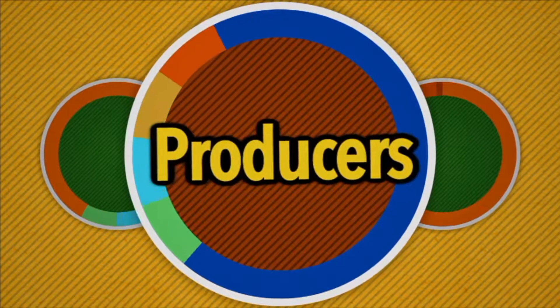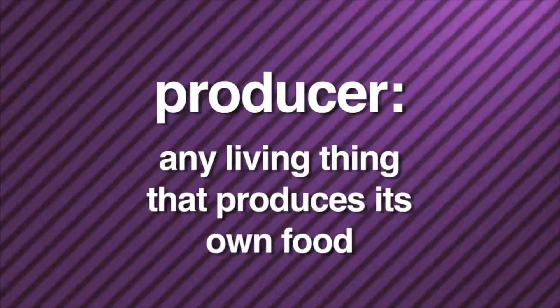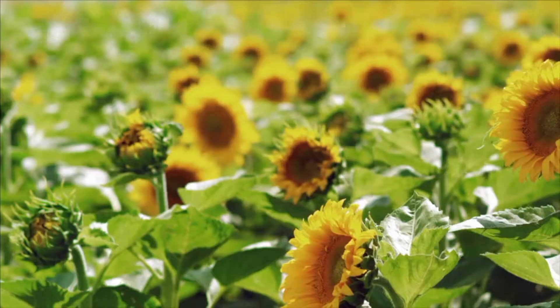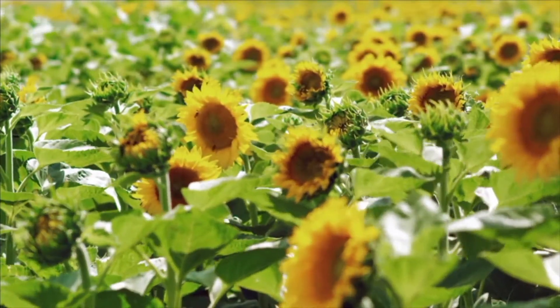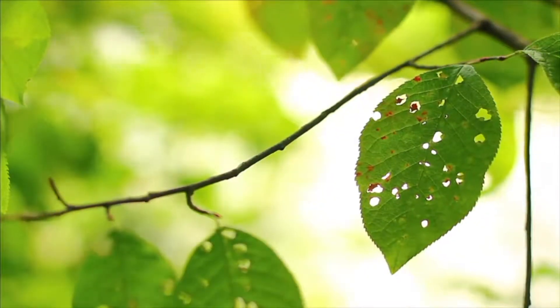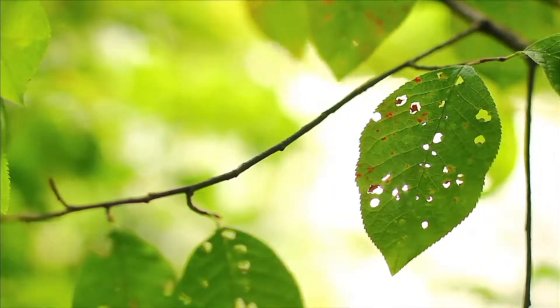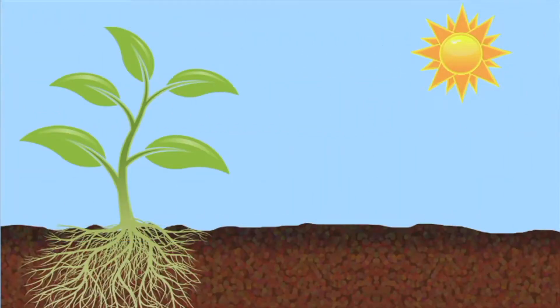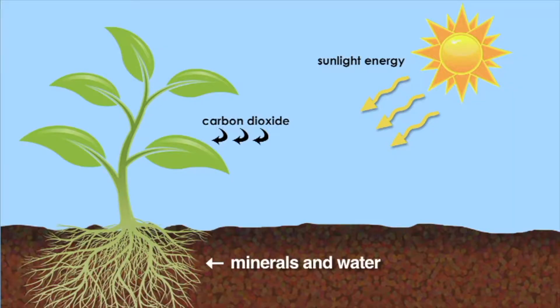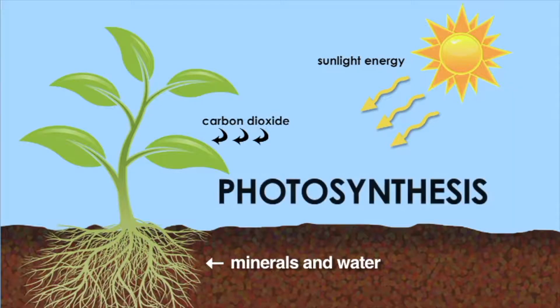Producers. A producer is any living thing that produces its own food. Plants are producers. Plants produce their own food. Like all living things, they need food to live and grow. To produce food, plants use light energy from the sun, carbon dioxide from the air, and minerals and water from the soil. This process is called photosynthesis.